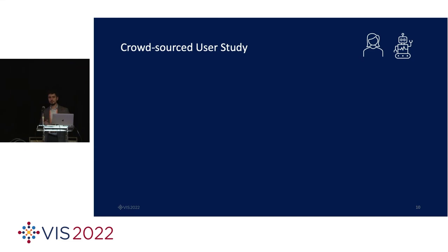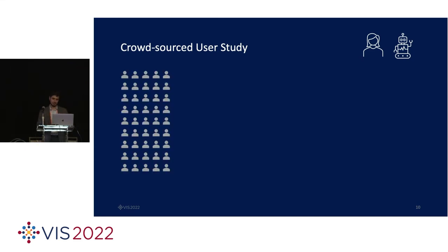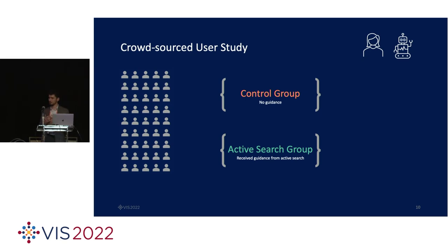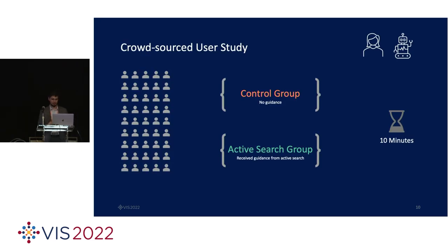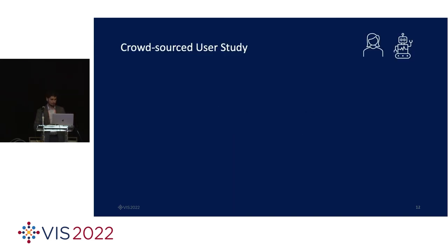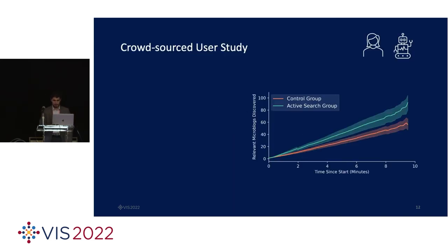In this user study, we drew attention to the early phase of sensemaking — namely data foraging. The task was to identify as many illness-related microblogs as possible. We designed and implemented this web-based tool containing a map visualization of microblogs at their posting locations. Hovering on dots triggered a tooltip containing the microblog and the option to bookmark a data point. We put this tool on Amazon's Mechanical Turk. We recruited participants and randomly assigned them into two groups: the control group, which did not receive recommendations from an active search algorithm, and the active search group, which did receive recommendations. We gave people 10 minutes to find as many relevant points as possible.